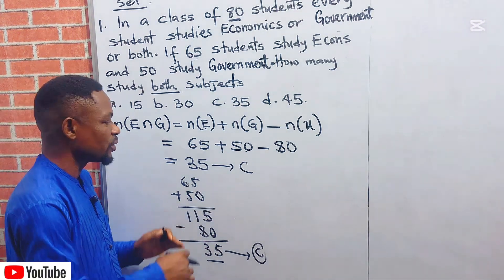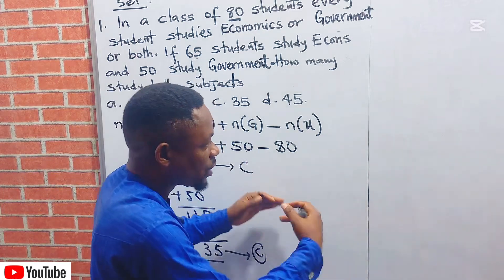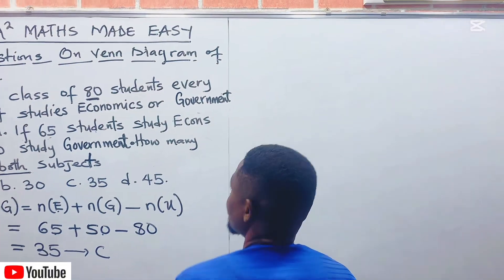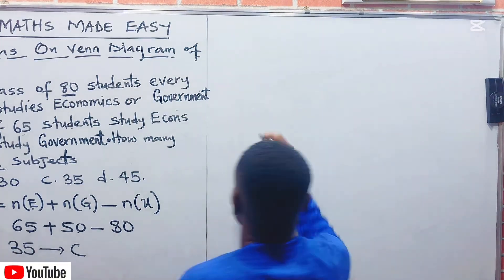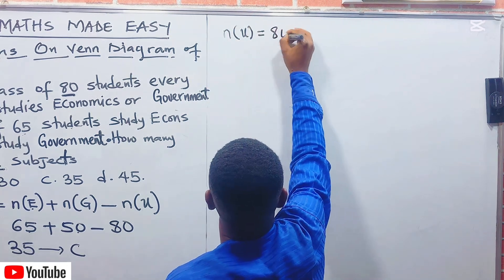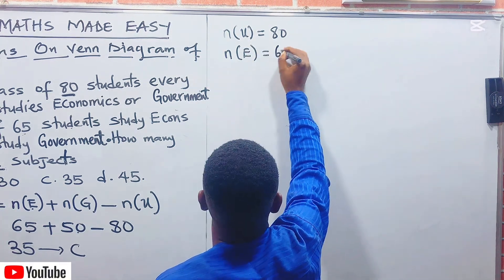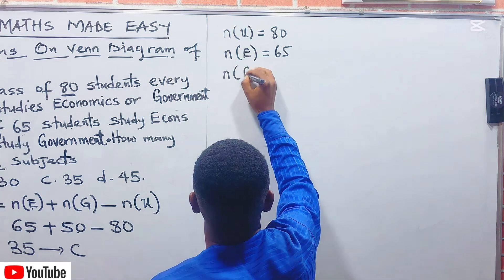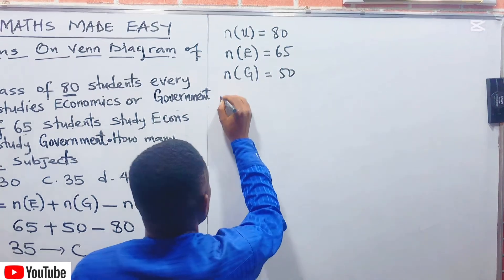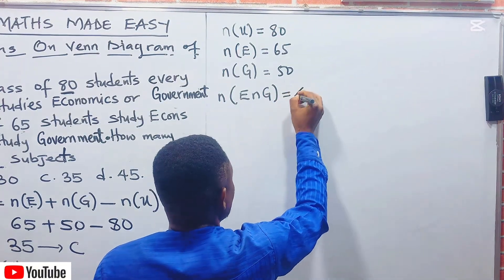But some people may ask, how does this thing exist? I want to show you the normal way by which you can solve it. Let us now verify it and know whether what we solved is exactly what they asked. The number of the universal set, remember, is given as 80. The number that offered Economics is given as 65. And the number that offer Government is given as 50. Then we are looking for the number that offered Economics and Government. It is not yet known. Call it X.